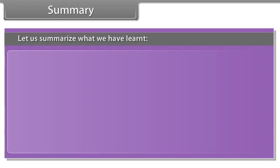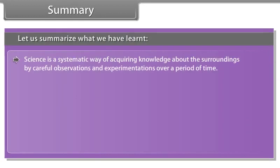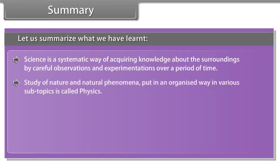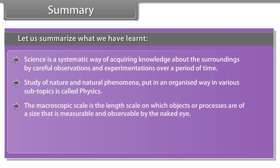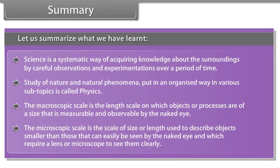Summary. Let us summarize what we have learned. Science is a systematic way of acquiring knowledge about the surroundings by careful observations and experimentations over a period of time. Study of nature and natural phenomena put in an organized way in various subtopics is called physics. The macroscopic scale is the length scale on which objects or processes are of a size that is measurable and observable by the naked eye. The microscopic scale is the scale of size or length used to describe objects smaller than those that can easily be seen by the naked eye and which require a lens or microscope to see them clearly.